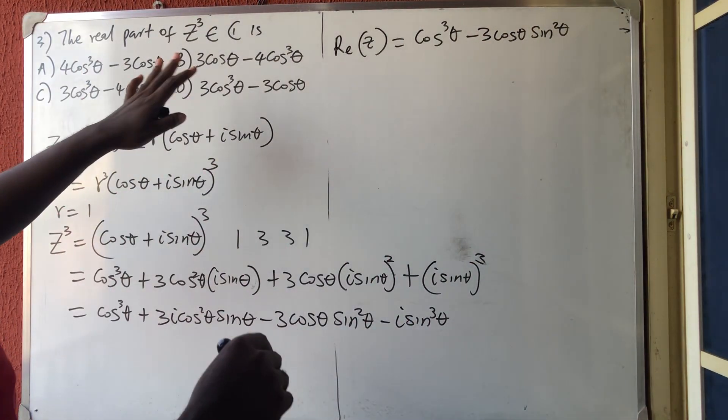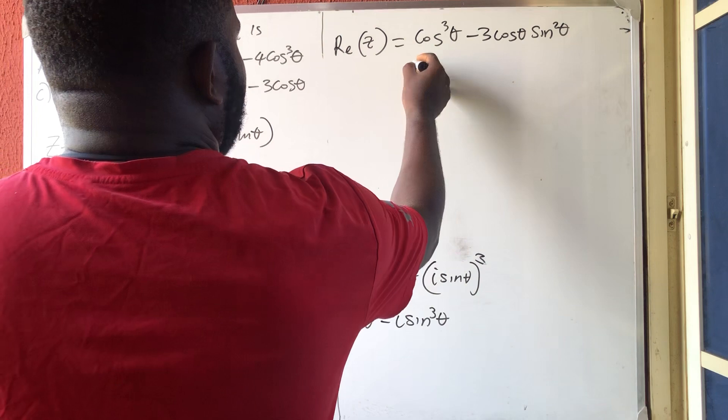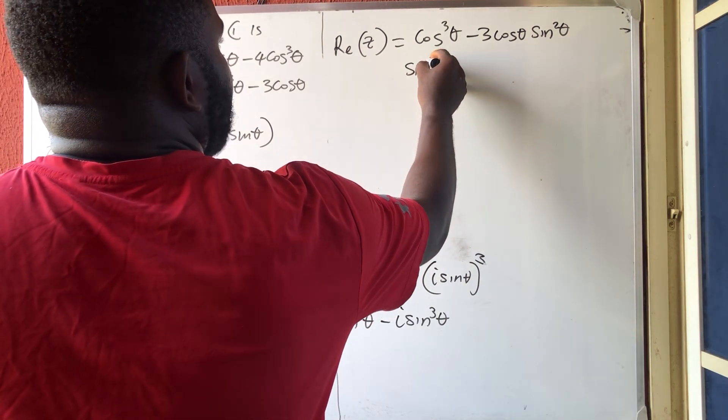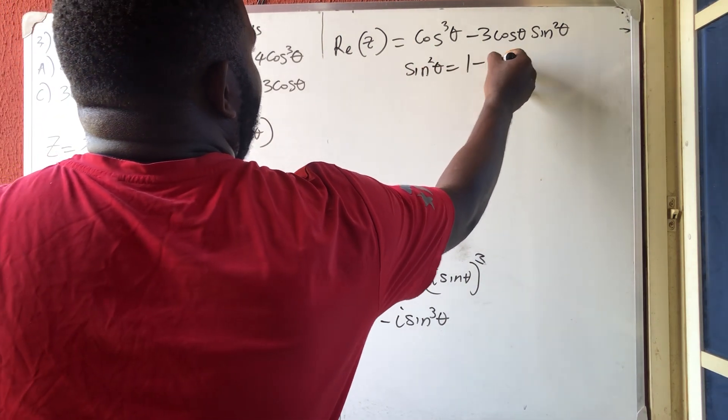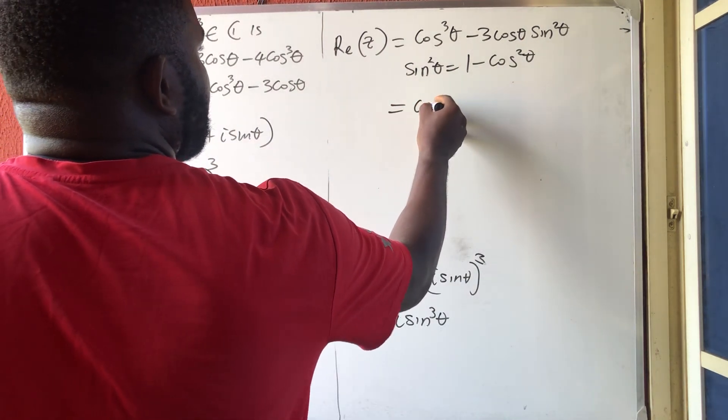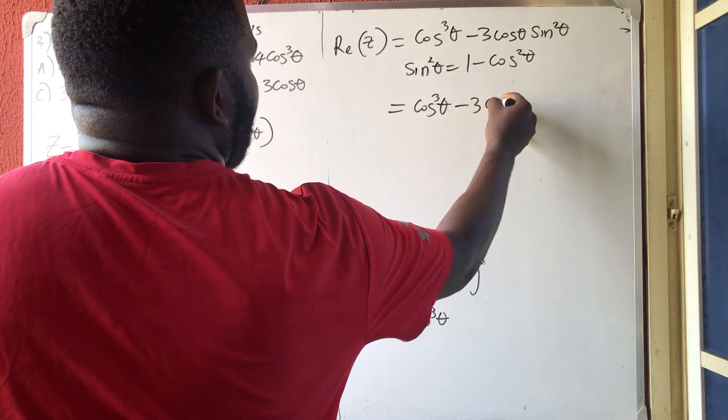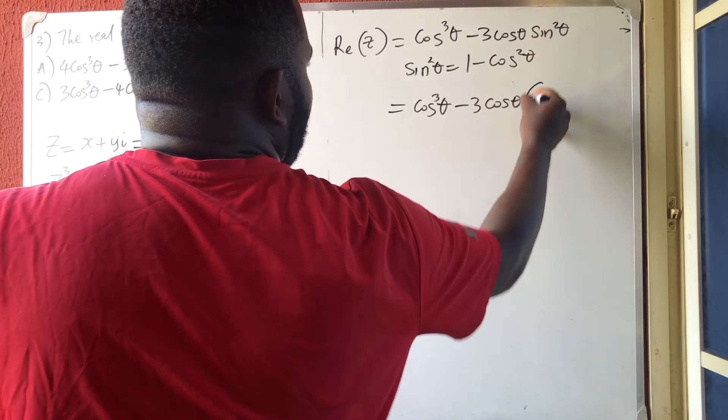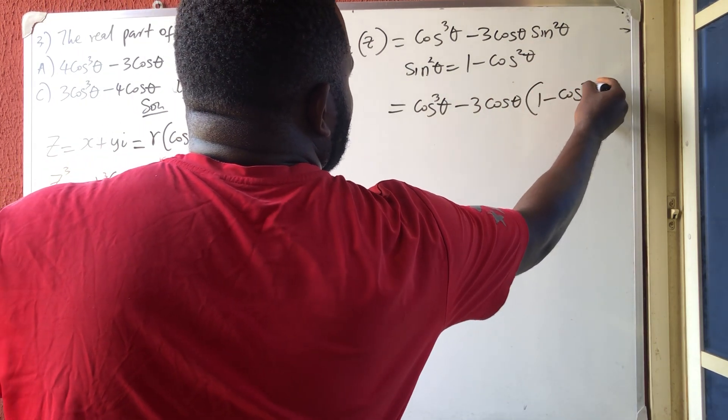But, if you look at their option, their own is in all cosine theta. I know that sin square theta is equal to 1 minus cos square theta according to trigonometry. So, this should be cos 3 theta minus 3 cos theta. Instead of putting this, I'm going to write 1 minus cos square theta.